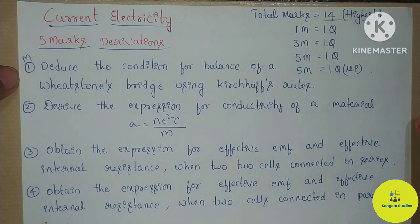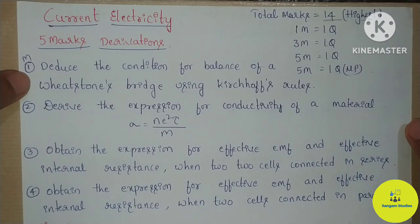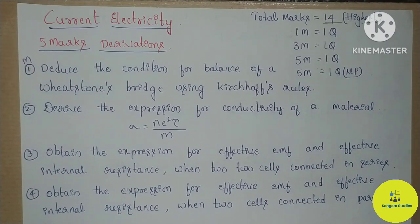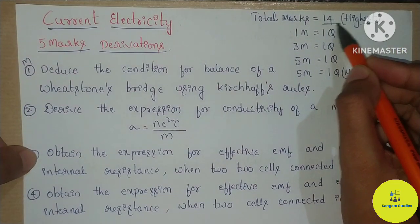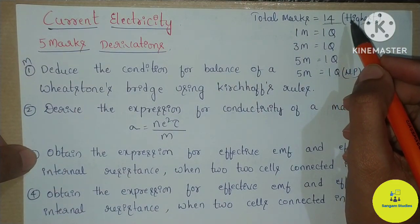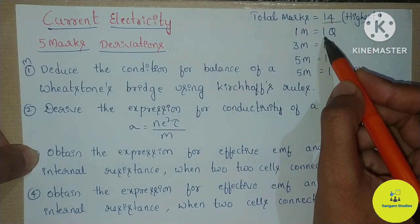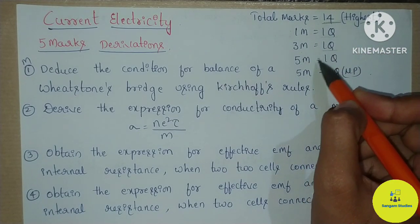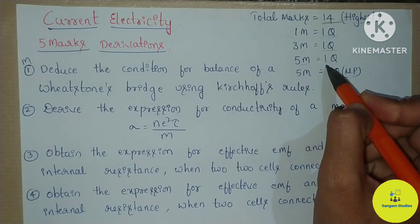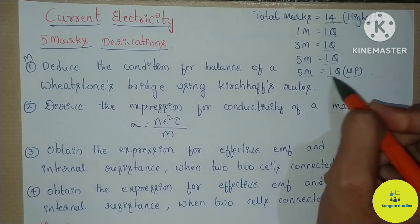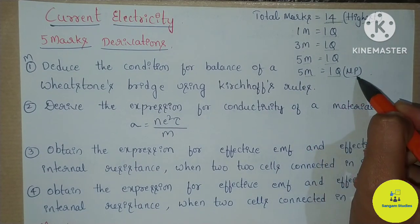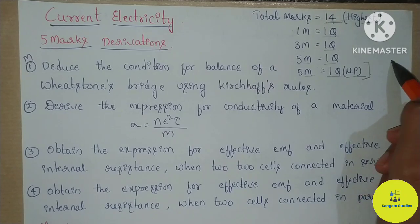I will discuss the important questions in current electricity for your mid-term examination. You can compare the total marks — 14 marks in every chapter. The breakdown is: 1 mark question is 1, 3 mark question is 1, and 5 mark questions are covered including numericals.